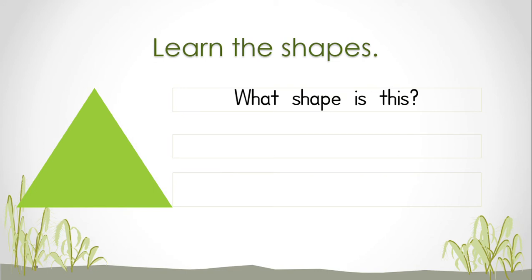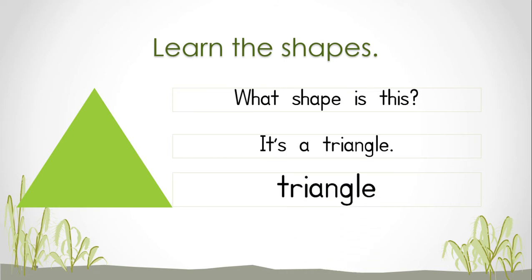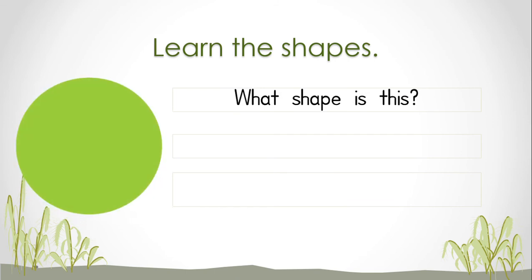Triangle. What shape is this? It's a triangle — t-r-i-a-n-g-l-e — triangle. Can you say it? Triangle. What shape is this? It's a circle — c-i-r-c-l-e — circle. Can you say it?